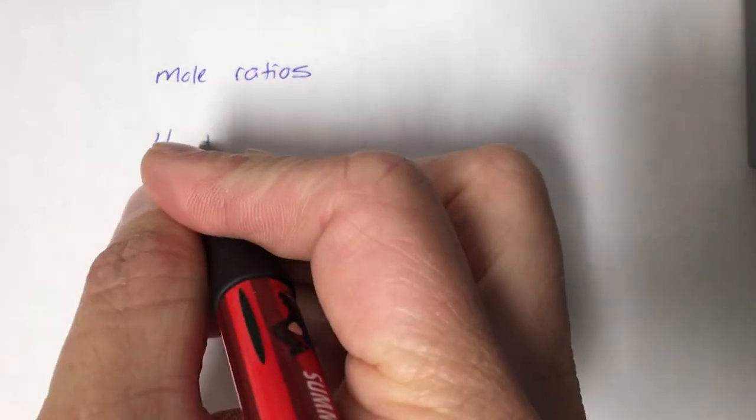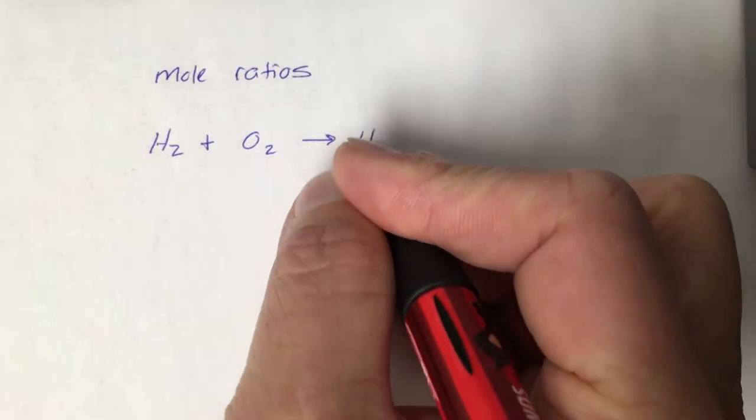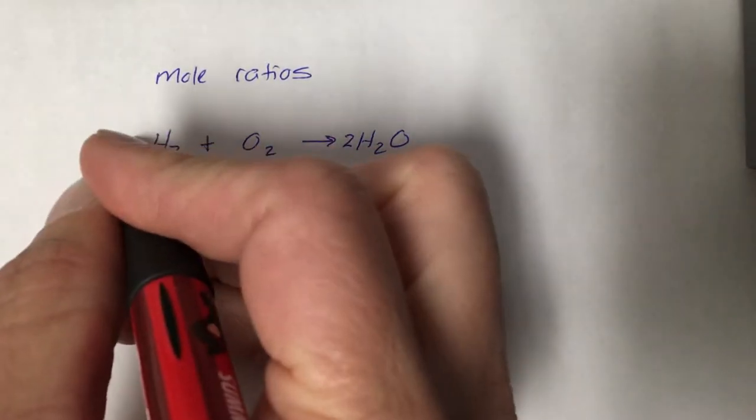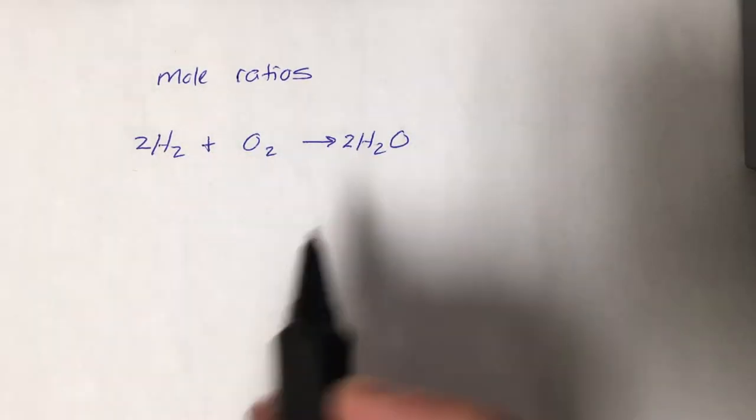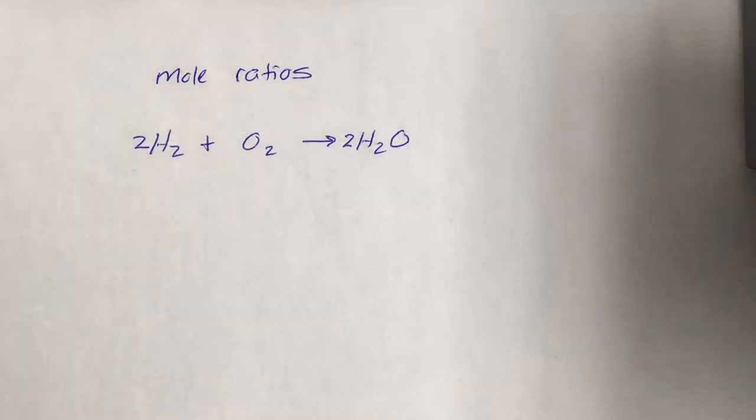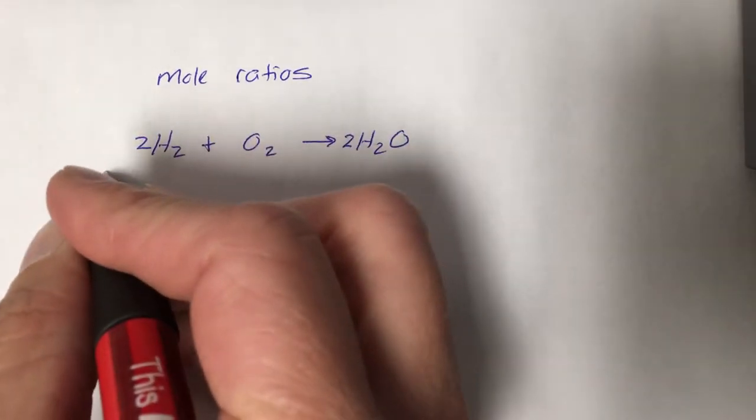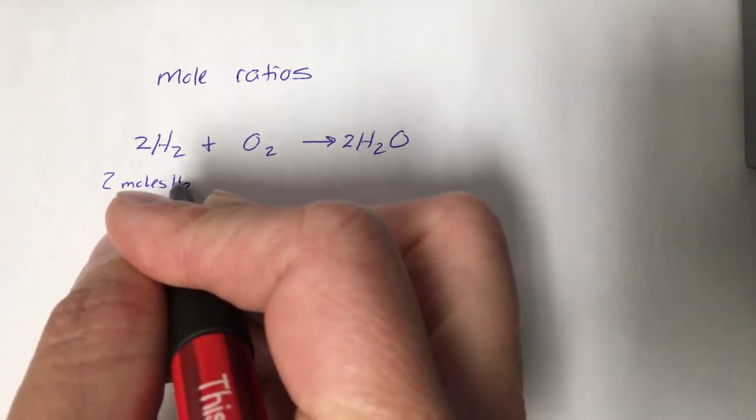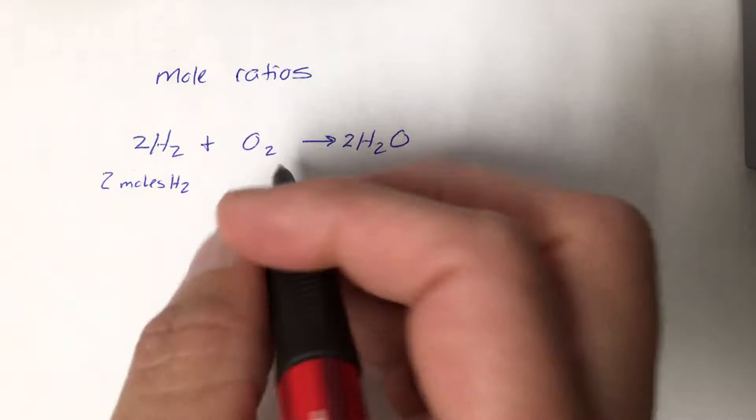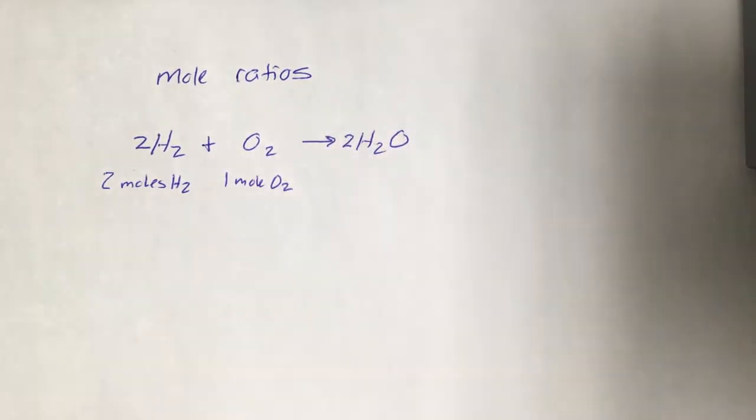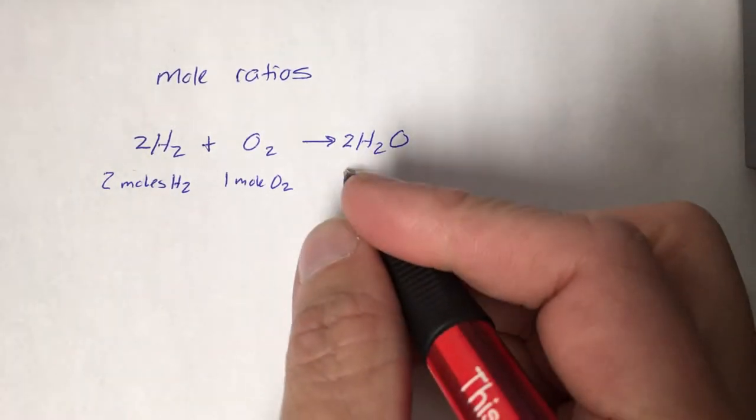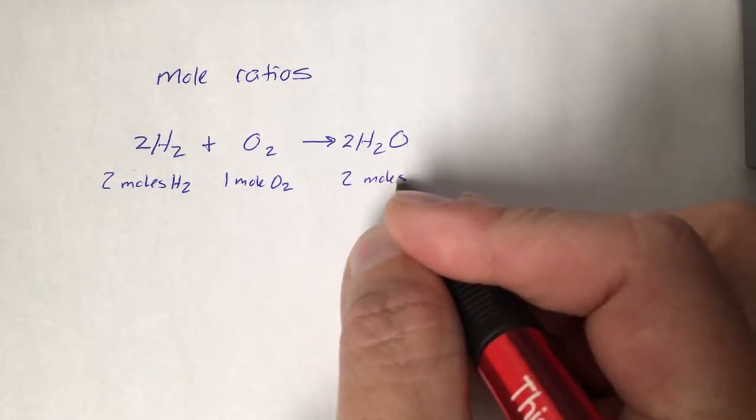Mole ratio problems always start with a balanced equation like this one. In this equation these coefficients that we see or in this case don't see in front of the substances represent a ratio of substances that you either need or can produce in that reaction. We can interpret this 2H2 as meaning two moles of hydrogen. There's nothing in front of the oxygen. We can interpret that as meaning one mole of oxygen. And we've got a two in front of the water. We can interpret that as meaning two moles of water.